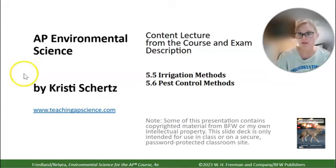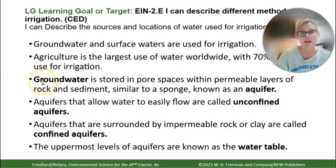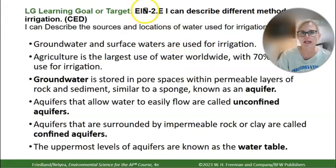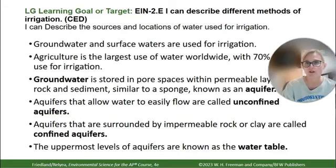This is topics 5.5 and 5.6 from the course and exam description for AP Environmental Science. Go ahead and follow along with your study guides as we go through these learning objectives. The first learning objective, EIN-2.E, is at the top of your screen: 'I can describe the different methods of irrigation,' from the College Board course and exam description.